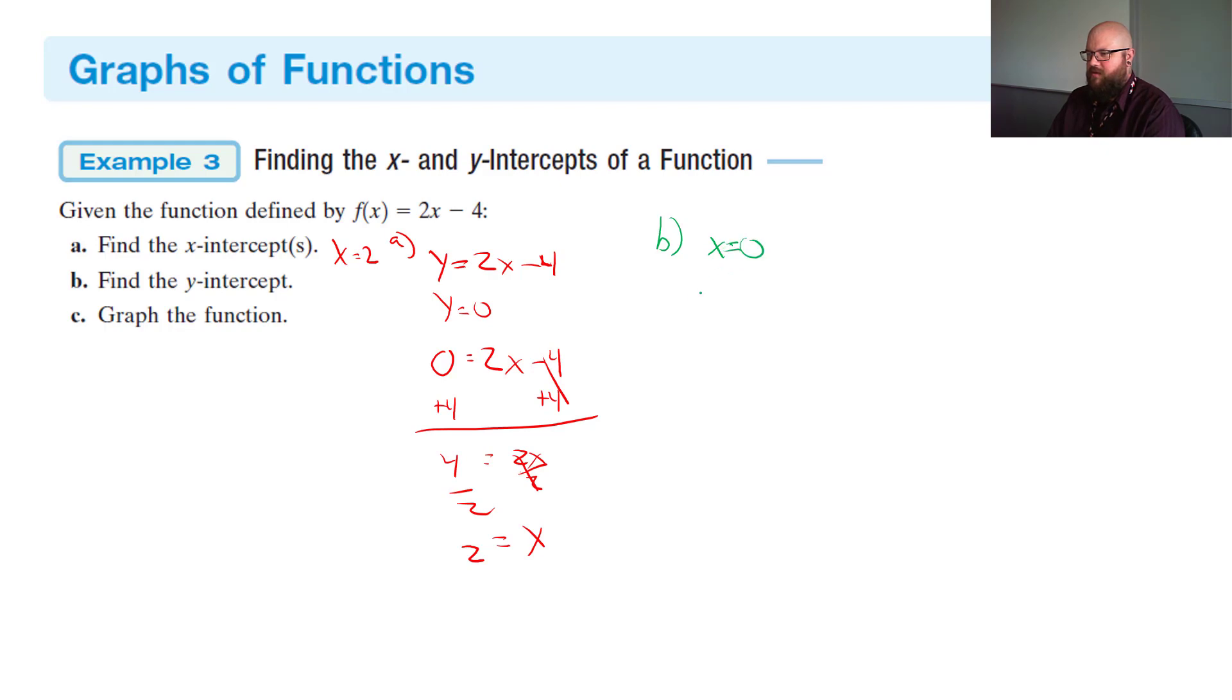So in this case, we're going to have y = 2 times 0 minus 4. So y equals what? You really should get negative 4. So our y intercept is at negative 4. And then for c, it wants us to graph the function.